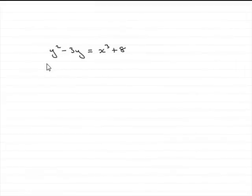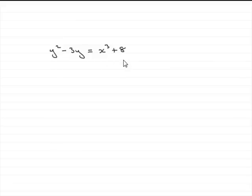In the first part of this question, we're given y squared minus 3y equals x cubed plus 8 and asked to find dy/dx. This is a typical implicit equation — implicit equations have literally x's and y's scattered on both sides.